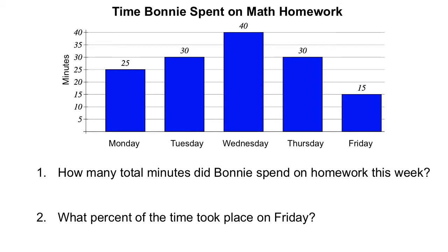Here's another example of a bar graph. You can see we've got the title: time Bonnie spent on her math homework. You can also see that we've got a scale — it's counting by five: 0, 5, 10, 15, 20, 25, 30, 35, 40.